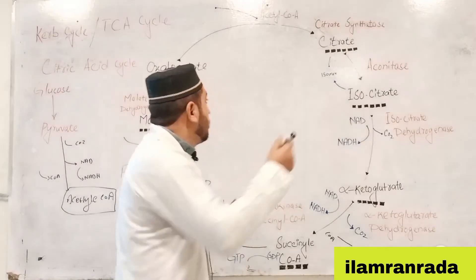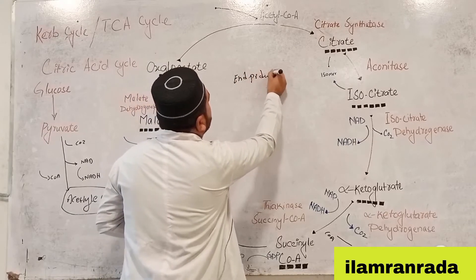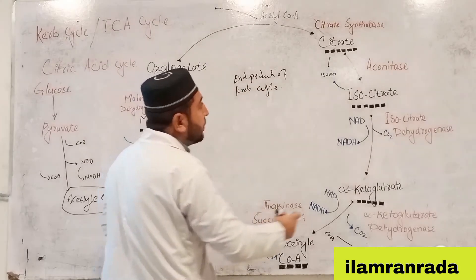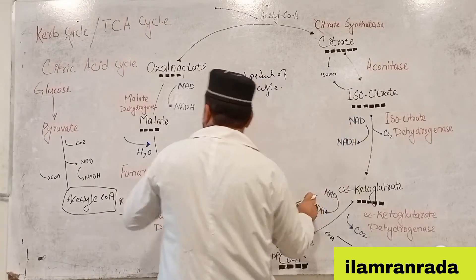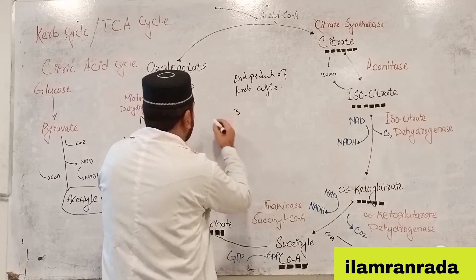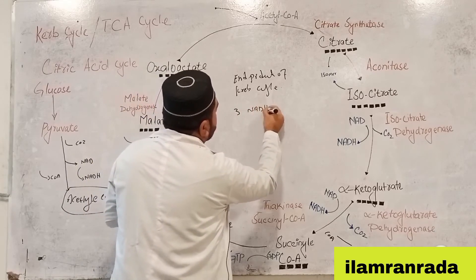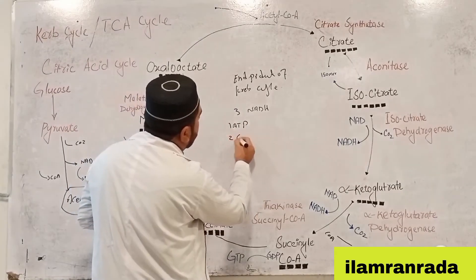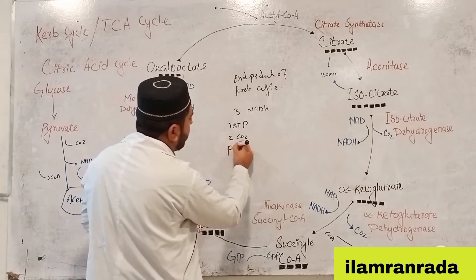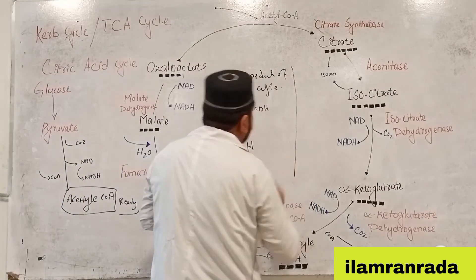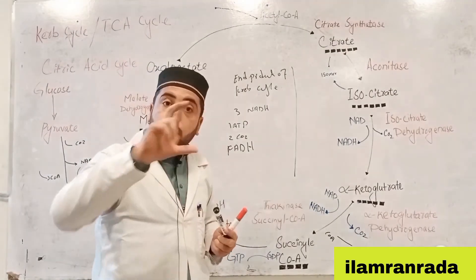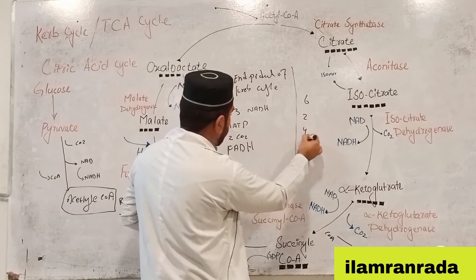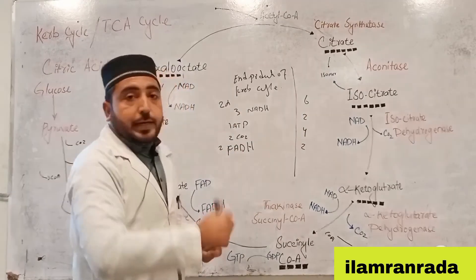Students, the end products of one turn of the Krebs cycle are: 3 NADH, 1 ATP, 2 CO2 released, and 1 FADH2. Since glucose produces two acetyl CoA molecules, multiply these values by two: 6 NADH, 2 ATP, 4 CO2, and 2 FADH2. The Krebs cycle does not produce a large amount of ATP directly.